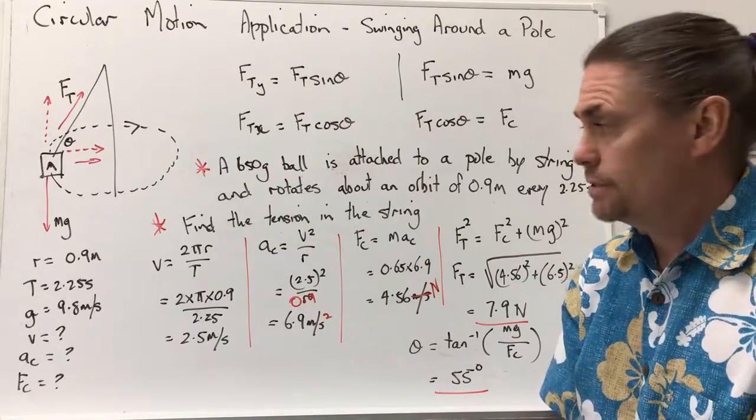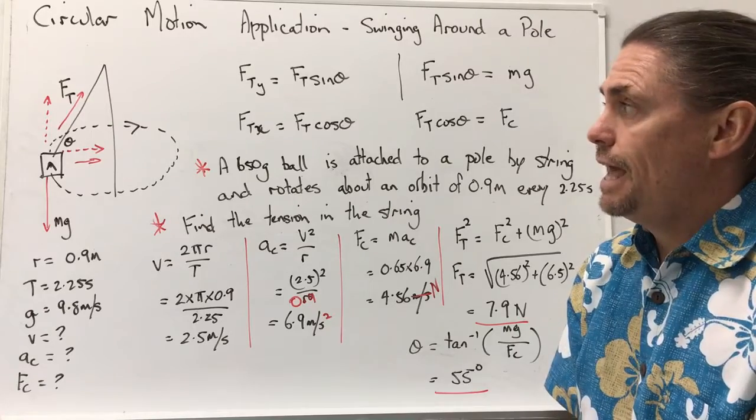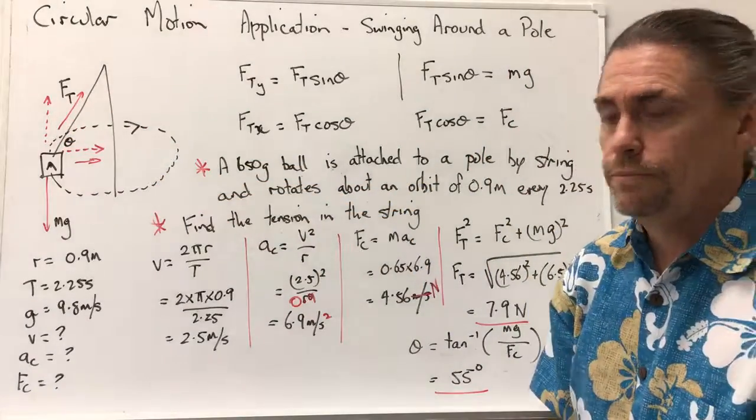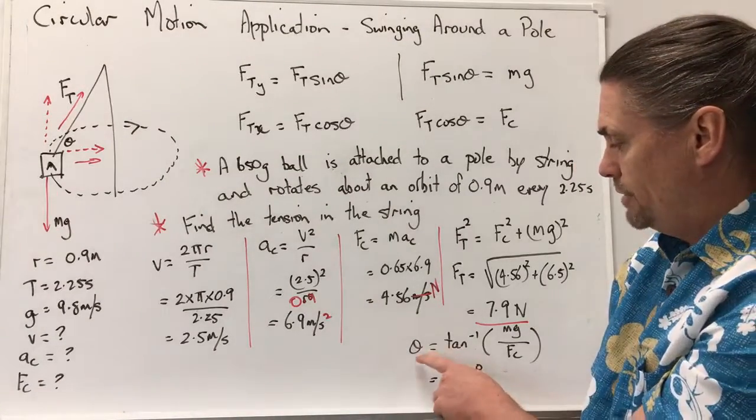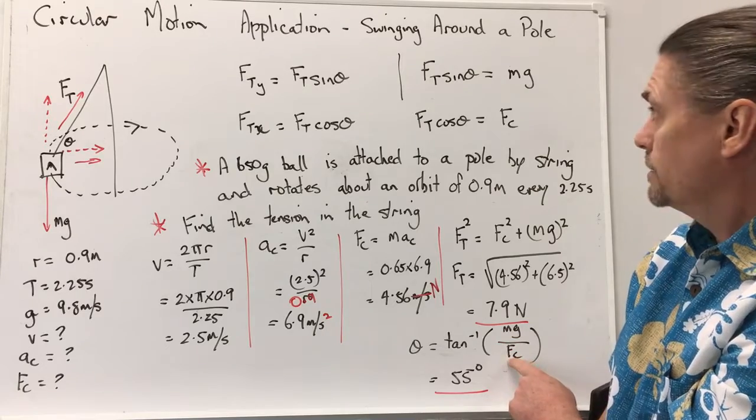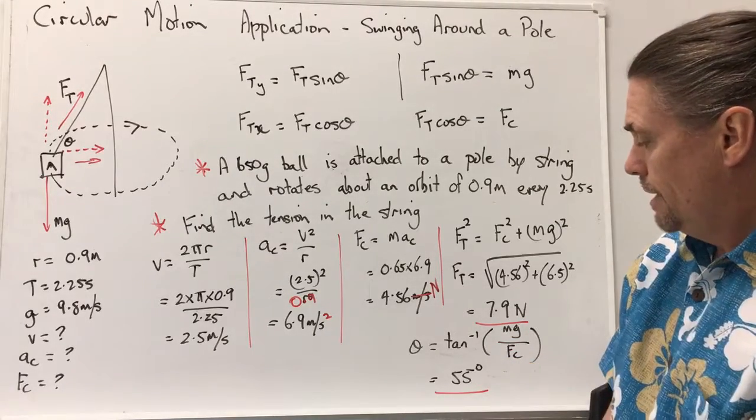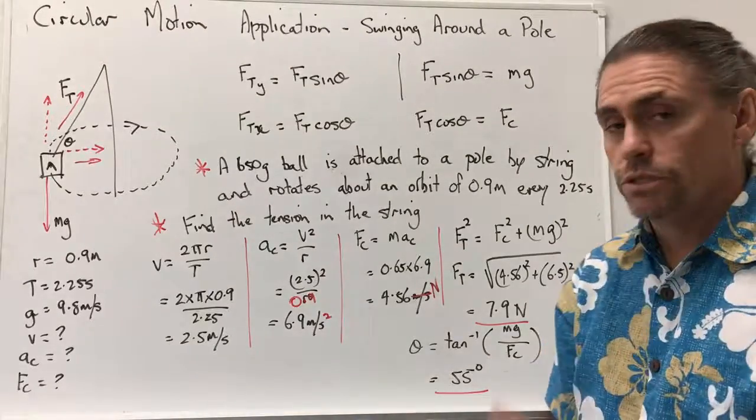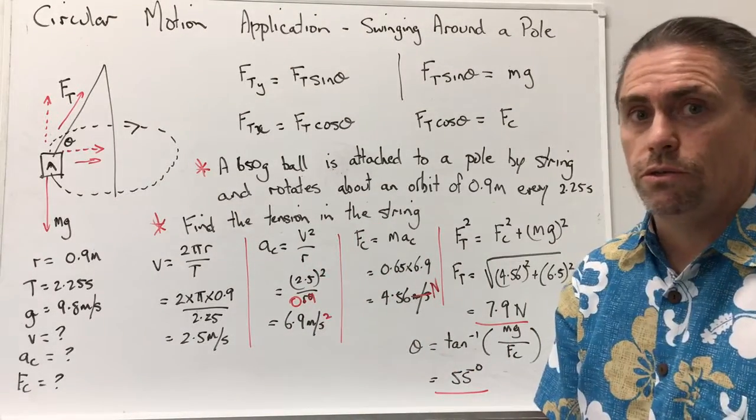We can also calculate the angle that this object will make with respect to the horizontal as well, and we do that by rearranging the tan relationship. So we get mg over our centripetal force, put our numbers in, and we find that this particular object will swing out at 55 degrees to the horizontal.